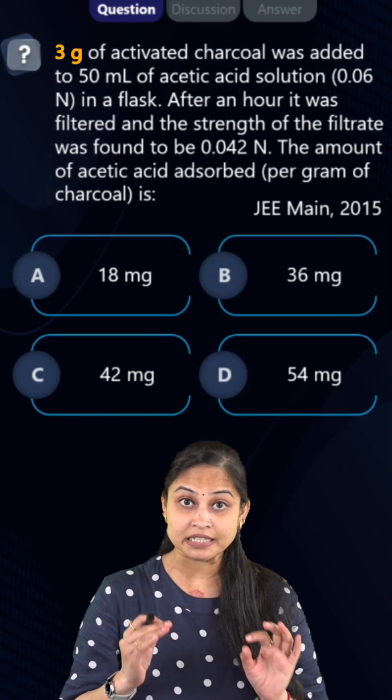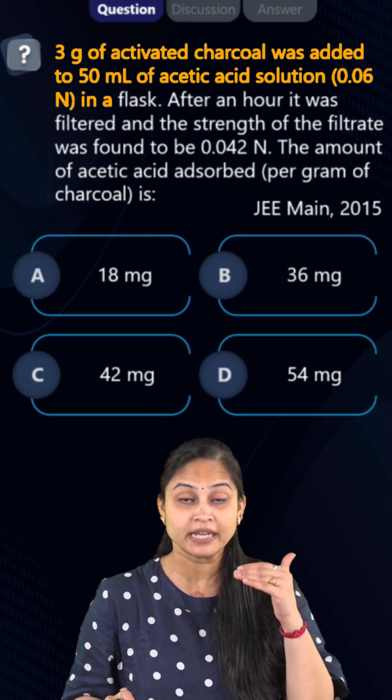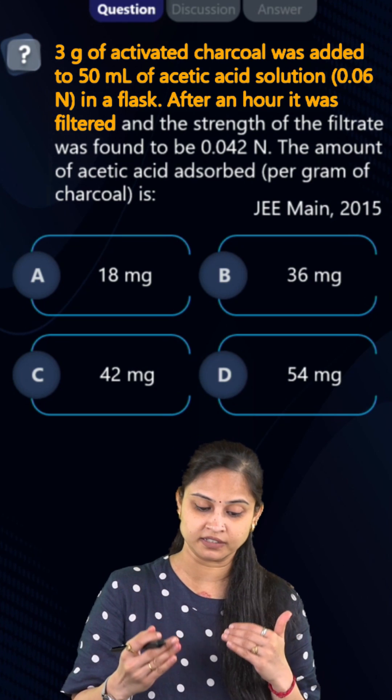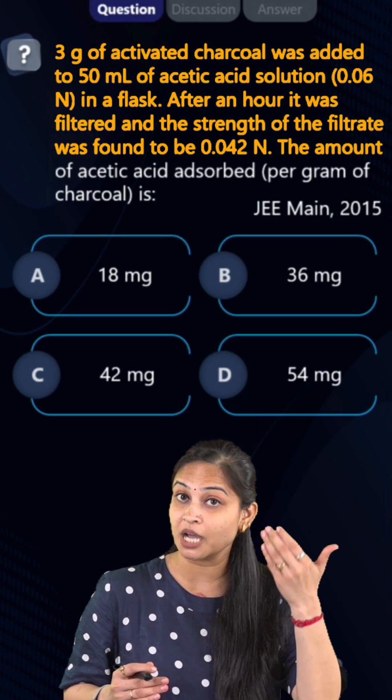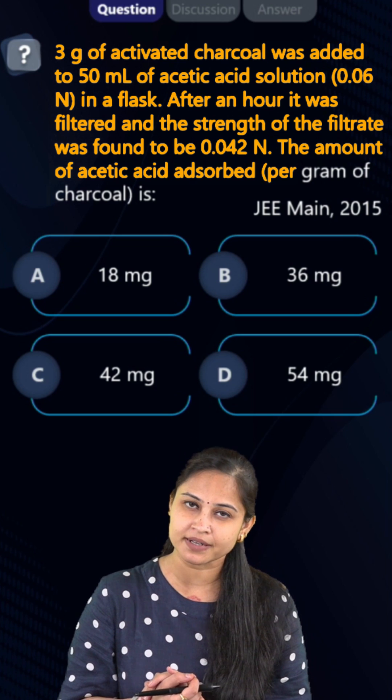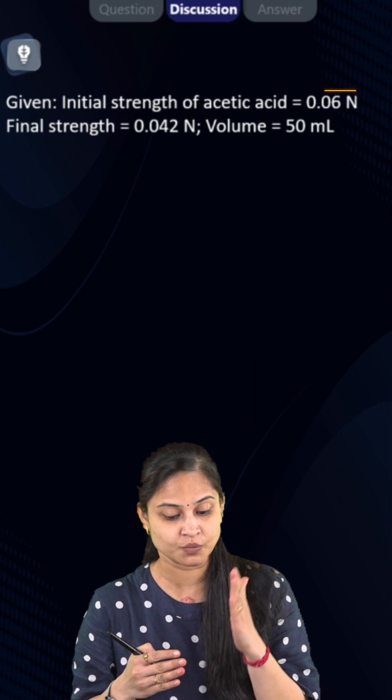The question over here is: 3 grams of activated charcoal was added to 50 mL of acetic acid solution in a flask. After an hour it was filtered and the strength of the filtrate was found to be 0.042 normal. The amount of acetic acid adsorbed per gram of charcoal is?